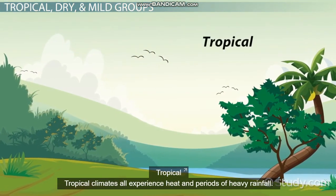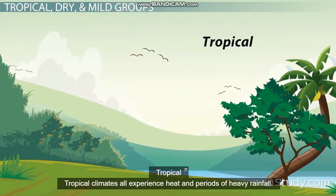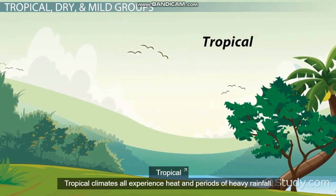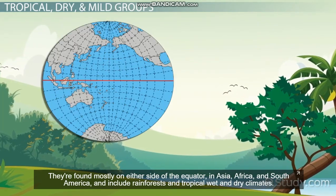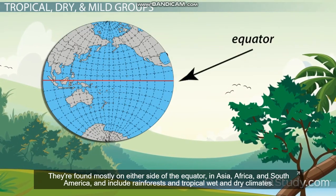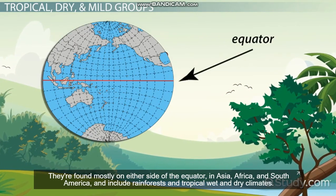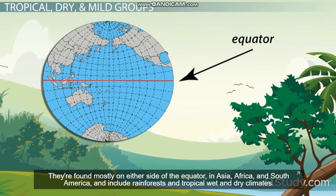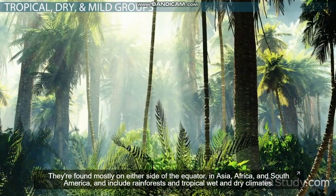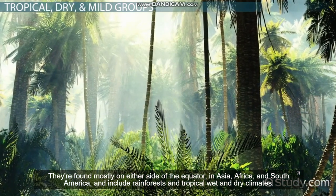Tropical climates all experience heat and periods of heavy rainfall. They're found mostly on either side of the equator in Asia, Africa and South America, and include rainforests and tropical wet and dry climates.